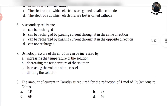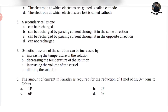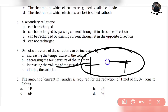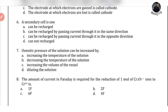Sixth question: a secondary cell is one that can be recharged. A primary cell is a cell which cannot be recharged, but a secondary cell is a cell which can be recharged. If you charge it in the same direction with positive and negative, it will recharge. Tell me the answer in the comment section.